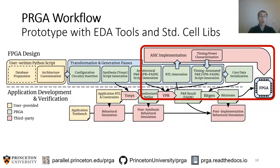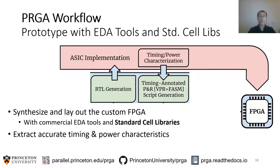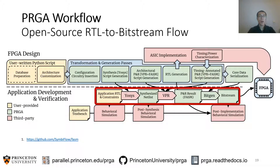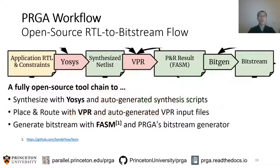The generated RTL can then be synthesized and laid out with commercial EDA tools and standard cell libraries. After the ASIC implementation, PRGA can regenerate the place-and-route scripts with accurate timing and power characteristics. An FPGA without a proper CAD flow is useless. Fortunately, there are powerful open-source CAD tools available — for example, Yosys for synthesis and VPR for place-and-route. PRGA generates all the scripts specific to your custom FPGA and provides a rich set of additional tools to automate the CAD flow.